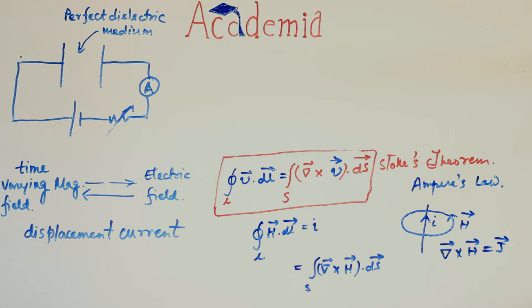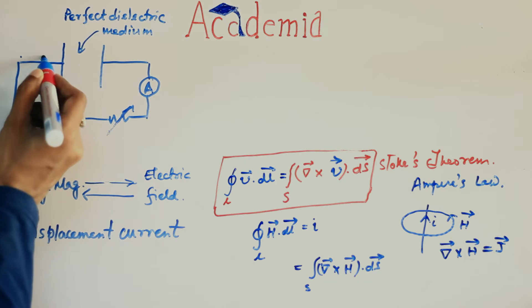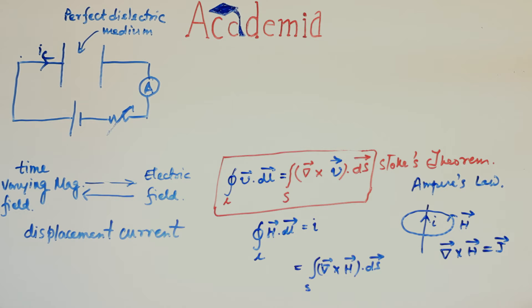From this setup we also know that the ammeter reads the charging current flowing in this circuit. Since the wire in this circuit is conducting this electric current, hence this charging current is called conduction current IC.